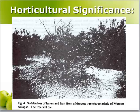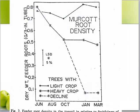Here is a picture of a Mercot tangerine that collapsed and died from heavy fruiting. The loss of young, white feeder roots likely caused the Mercot's death. This graph shows the dry weight of feeder roots growing in a tube over time in lightly cropping, heavily cropping, and extremely heavily cropping trees. Note significantly more feeder roots in the light-cropped trees. The trees that died because of the extremely heavy crop had almost no white feeder roots, which likely limited water uptake and caused the trees to die.